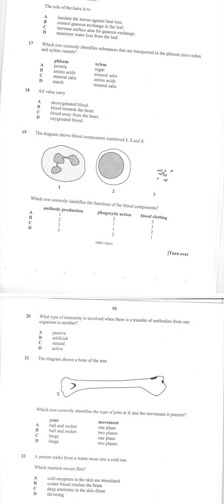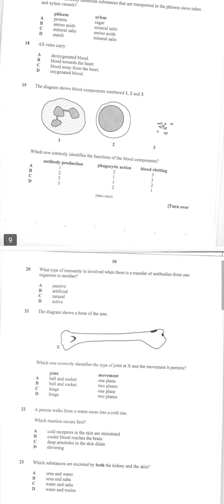Number 17: which row correctly identifies substances that are transported in the phloem sieve tubes and xylem vessels? The xylems are there to carry mineral salts and water. The phloems carry food that is produced during photosynthesis, which is starch. So number 17 is D.